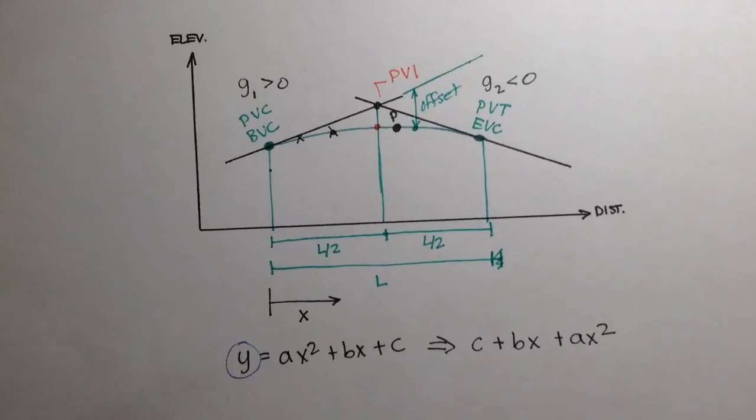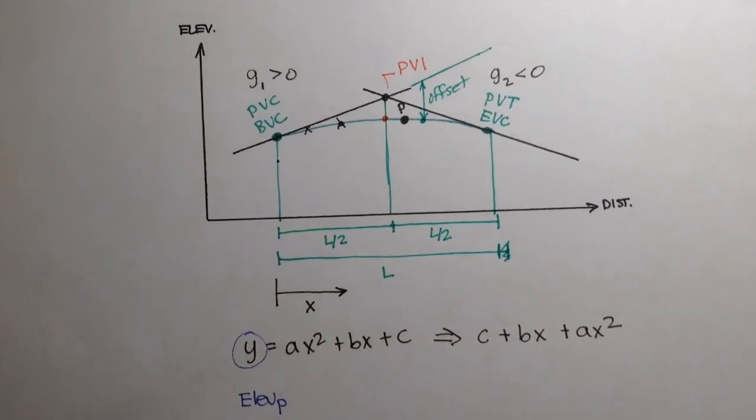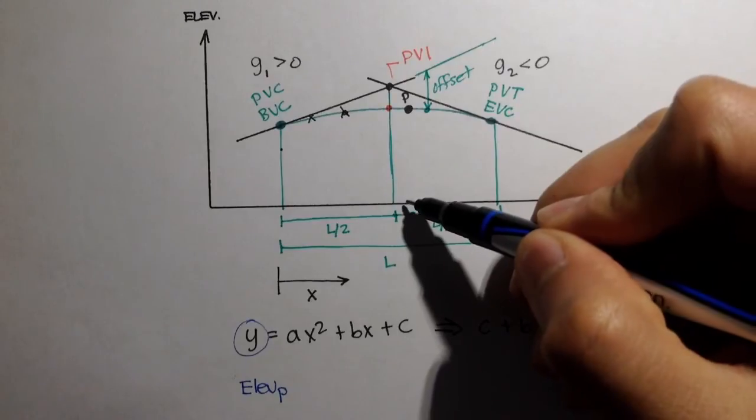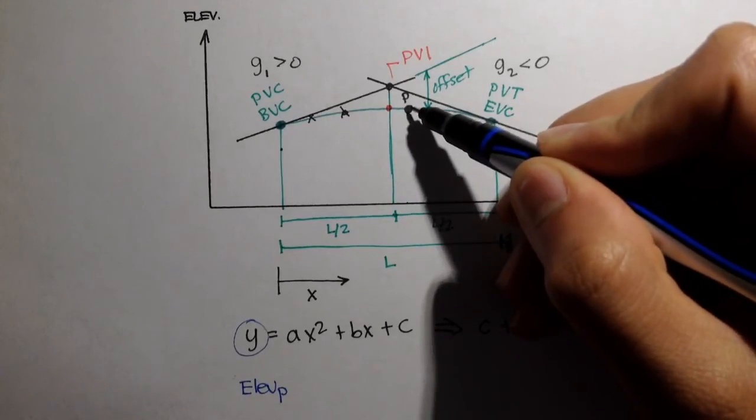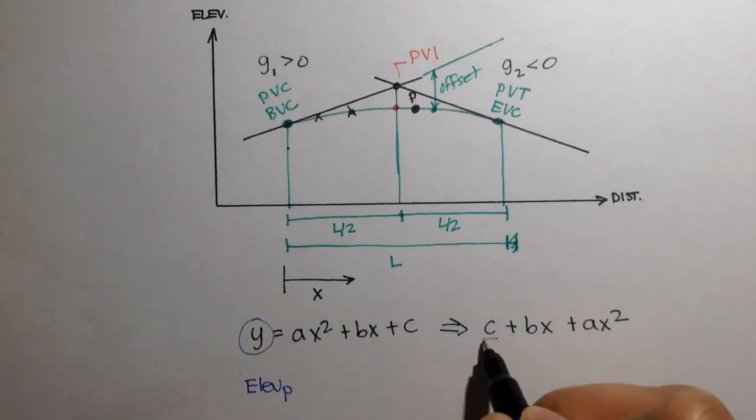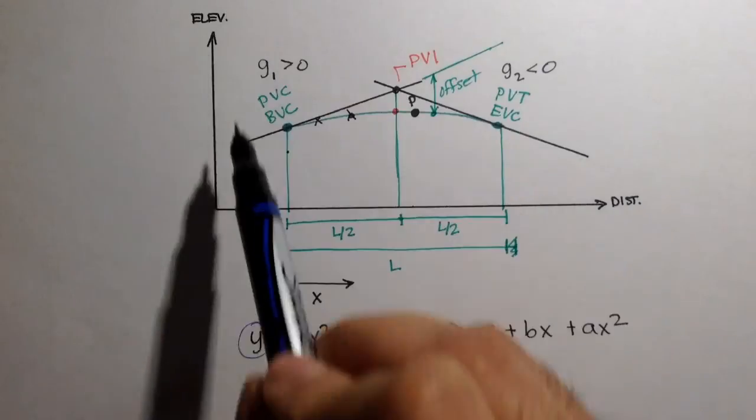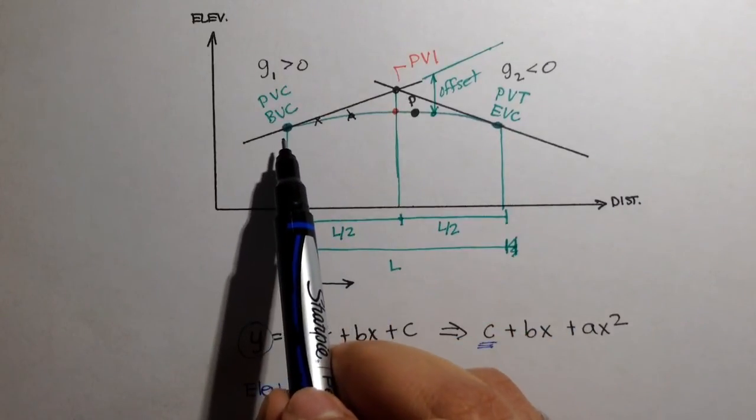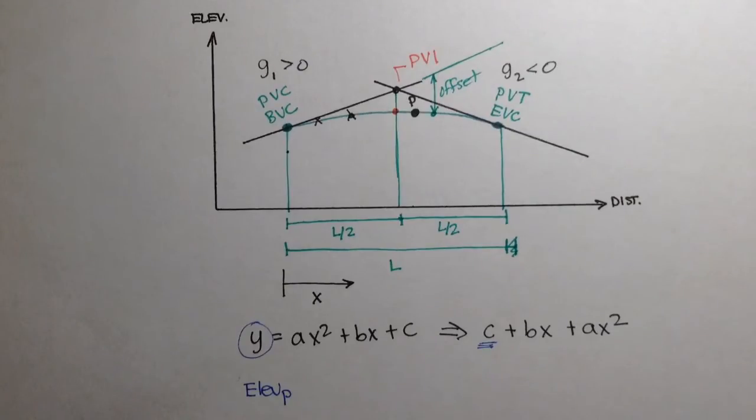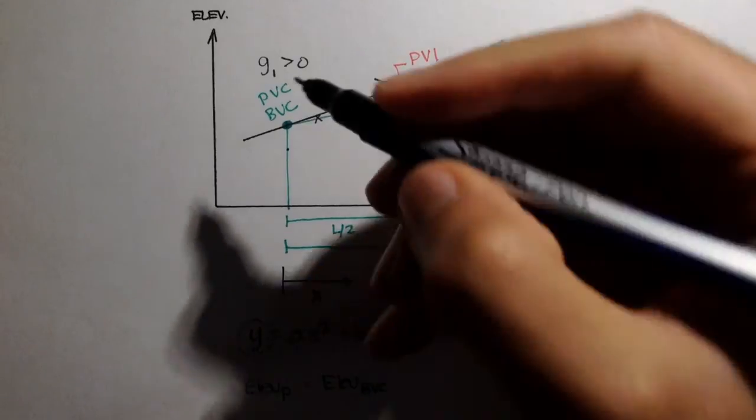So in our case, y is actually going to be the elevation of point p. Y is going to be the distance from some datum or the x axis up to the point p. So the next term we want to look at is c. Let's say our axis was actually, or at least our y axis ran through the BVC. If that was the case, then c would be equal to the elevation of the beginning of vertical curvature. So in our case, c is equal to elevation of this point.